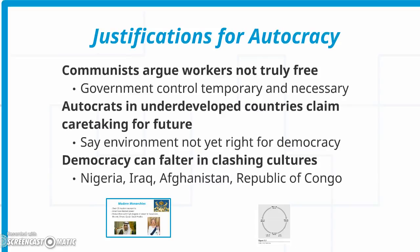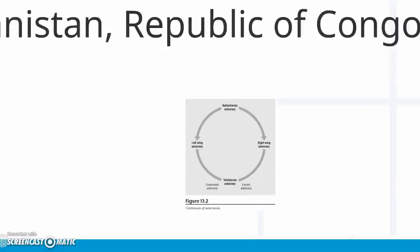Some of the justifications for autocracy: communists argue that workers are not truly free anyway and the government must control temporarily and necessarily in order to develop a more just society. Autocrats in underdeveloped countries claim they're caretaking for the future and that the environment is not yet right for democracy. Democracy can falter in clashing cultures such as Nigeria, Iraq, Afghanistan, and the Congo.